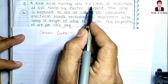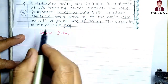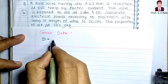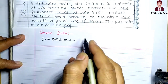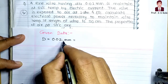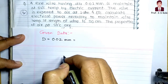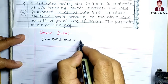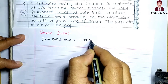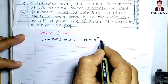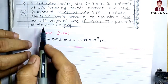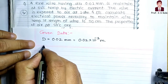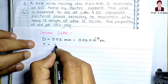In this problem, a fine wire is given having a diameter of 0.02 mm. Since all dimensions are taken in meters, this converts to 0.02 × 10⁻³ meter.